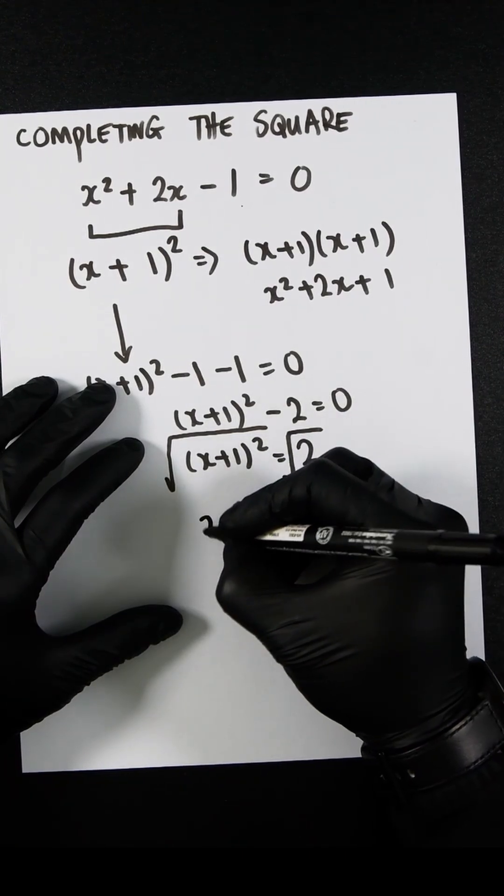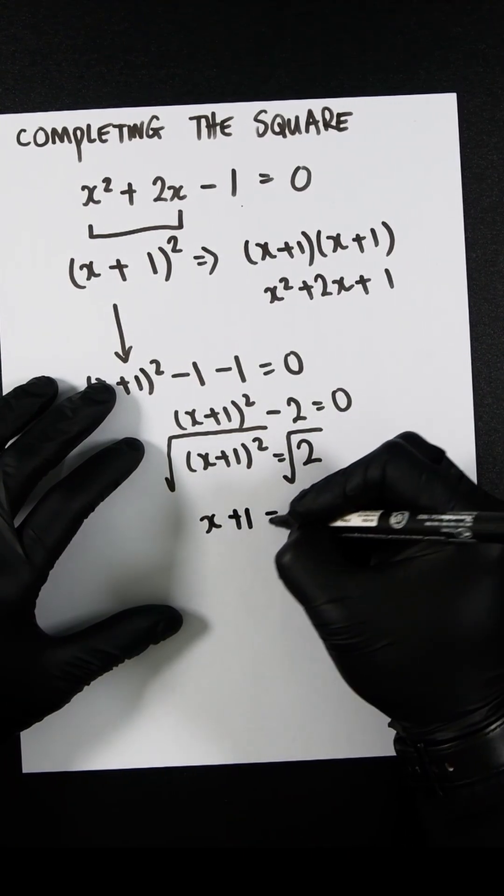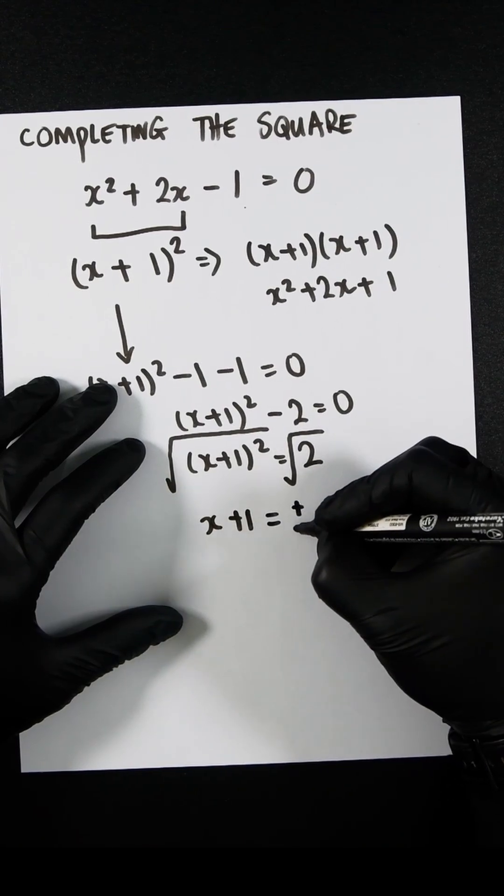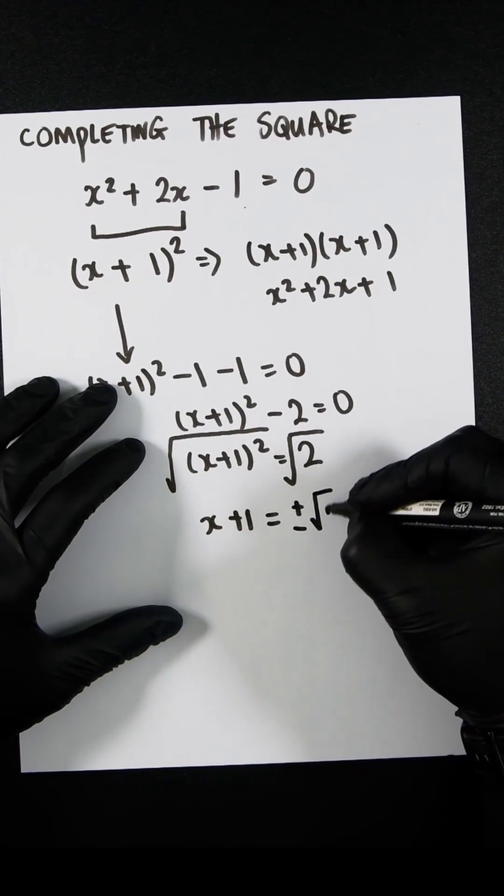So that would then become x + 1, and this would be plus or minus square root of two.